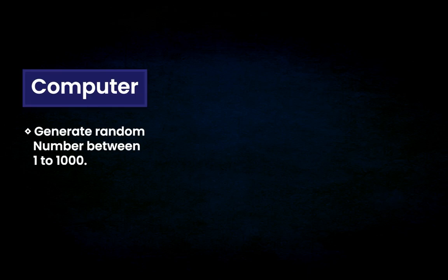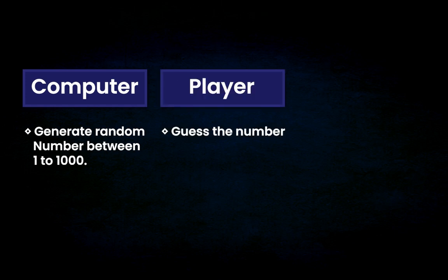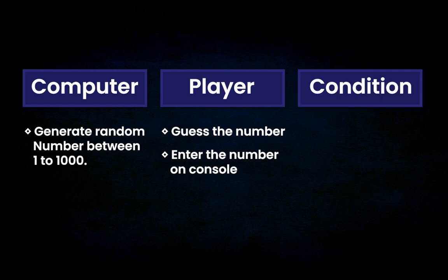Before we get into the code, let's quickly go over the flow of the game we're building. The computer will randomly pick a number between 1 and 1000, and the player has to guess what it is by entering their guess into the console. If the guess is wrong, the computer will give feedback, telling the player if their guess was too high or too low. If the guess is correct, the game will restart, and the process repeats until the right number is guessed.